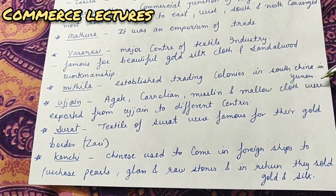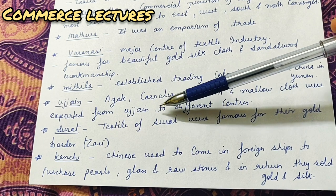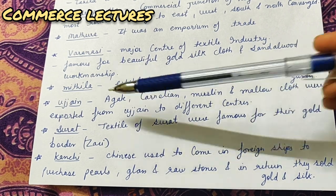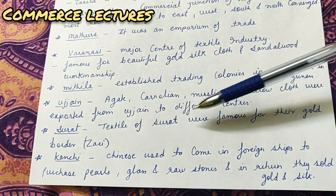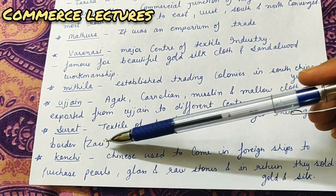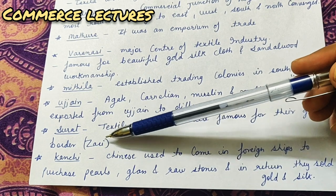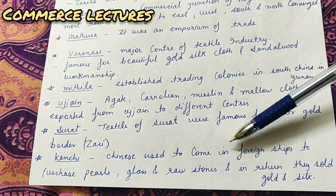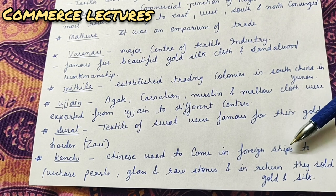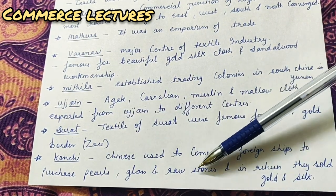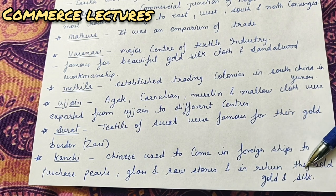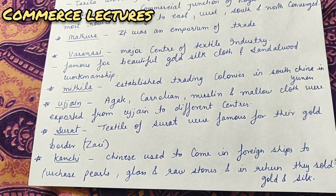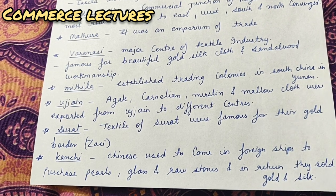Next is Ujjain. Carnelian, agate, muslin, and mellow cloth were exported from Ujjain - many types of cloth were exported to different places from here. Surat - everyone has heard the name. Textiles of Surat were famous for their gold border, known as zari work. Next is Kanchi, where Chinese used to come in foreign ships to trade in gold and silk.